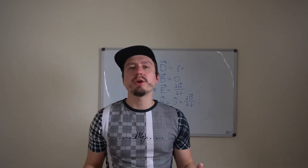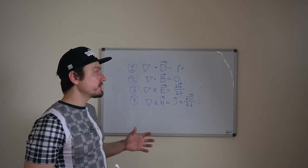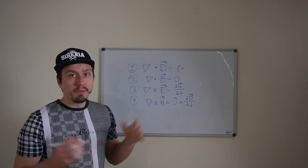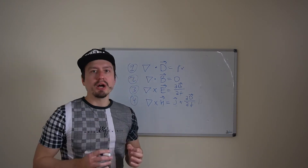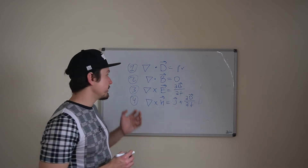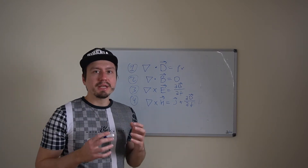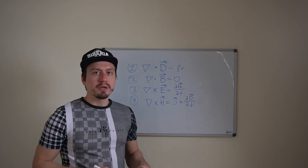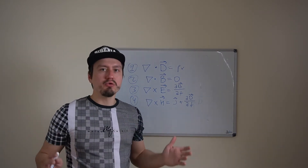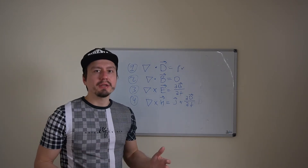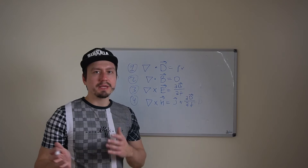Having discussed the terms that compose Maxwell's equations, we can now move to the equations themselves. The first equation states that the divergence of electric flux density equals the volume charge density, meaning the amount of field lines leaving per volume equals the amount of charge inside. On the other hand, the divergence of magnetic flux density equals zero, meaning every magnetic field line must return to its source — magnetic field lines always create loops, whereas electric field lines originate on positive charges and terminate on negative charges.